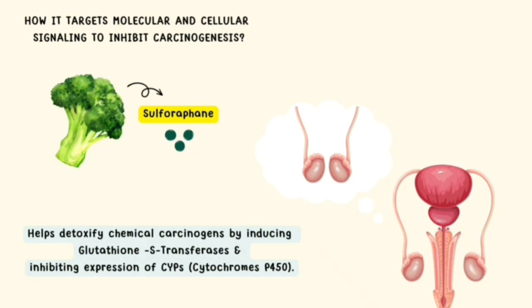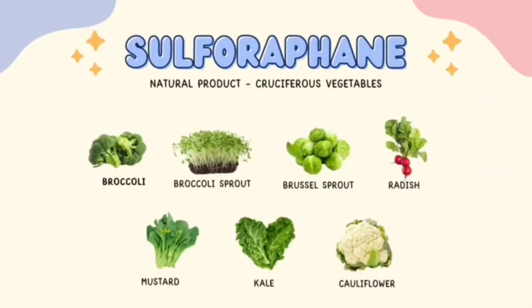Sulforaphane also alters expression of xenobiotic metabolizing enzymes and epigenetically modifies genes such as P21 and BCL2-associated X protein. The best source of sulforaphane is cruciferous vegetables, as it is an isothiocyanate found in these plants.